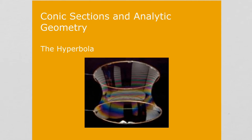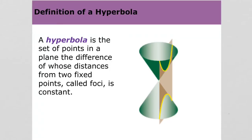We're continuing our study of conics with the hyperbola. The hyperbola is created when you've got your two stacked cones tip-to-tip and you slice down through both cones. When that happens, you get a hyperbola where it slices the two cones.